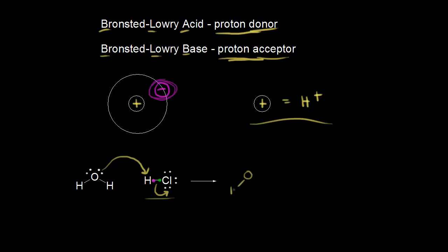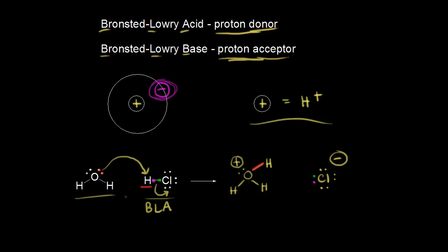Let's draw the products. The oxygen was bonded to two hydrogens, but it just picked up a proton, so now it's bonded to three, giving the oxygen a +1 formal charge. The two electrons in red pick up the proton to form this bond, producing H₃O⁺ — the hydronium ion. The chlorine becomes the chloride anion, picking up a negative charge. So HCl donated a proton — it's a proton donor, a Brønsted-Lowry acid. And water accepted the proton, so water is the Brønsted-Lowry base.